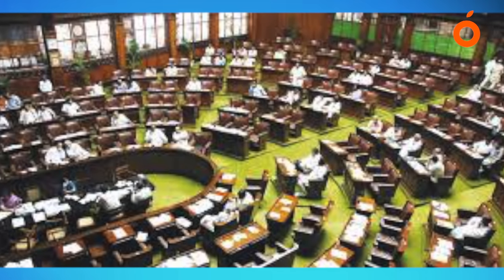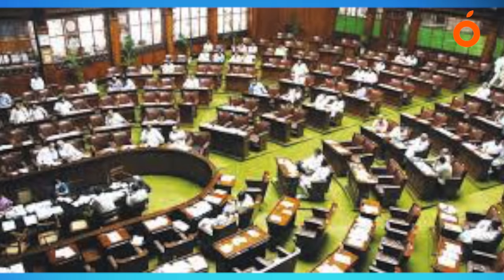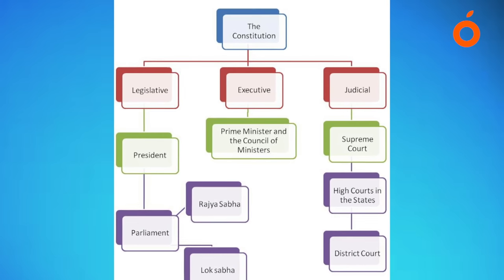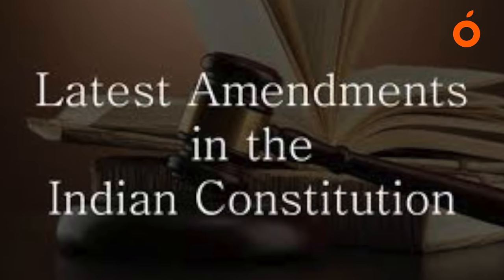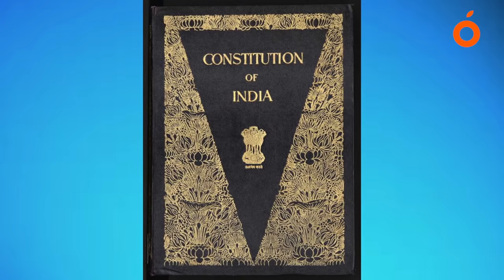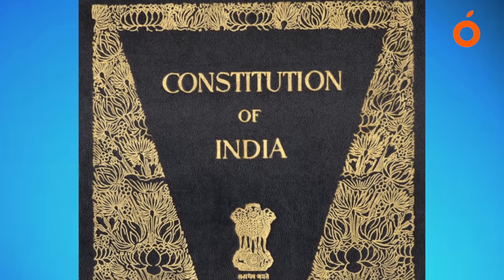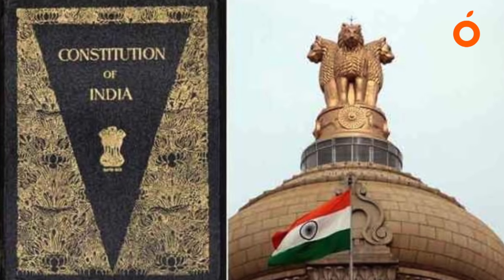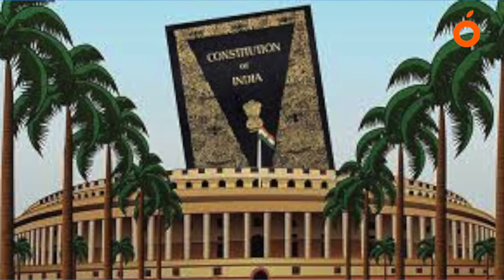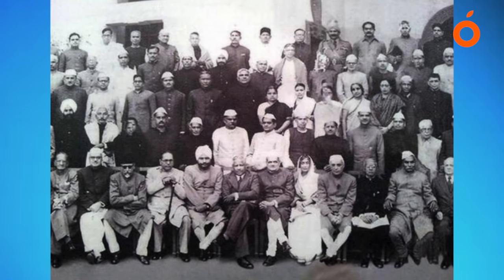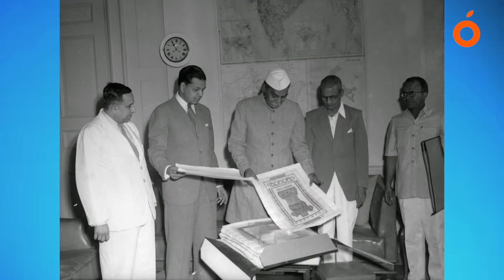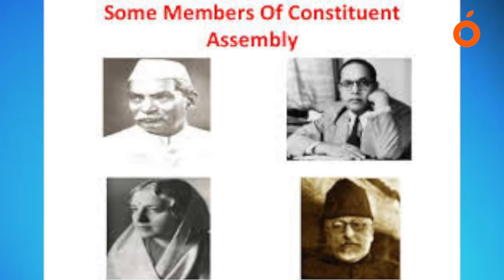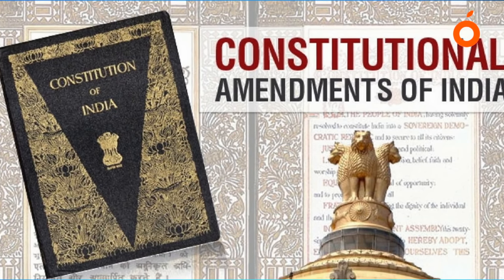If the bill seeks to amend the federal provisions of the constitution, it must also be ratified by the legislature of half of the states by a simple majority, that is a majority of the members of the house present and voting. After being duly passed by both houses of parliament and ratified by the state legislatures where necessary, the bill is presented to the President for assent. The President must give his assent to the bill — he can neither withhold his assent nor return the bill for reconsideration. After the President's assent, the bill becomes an act and the constitution stands amended.